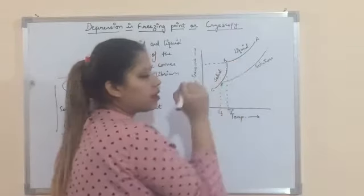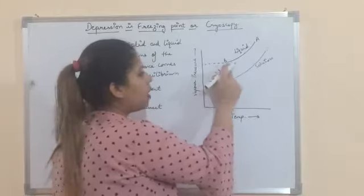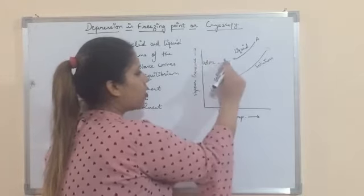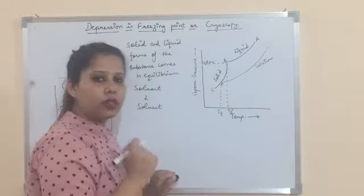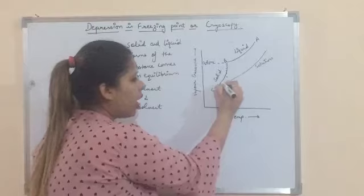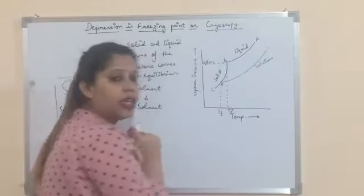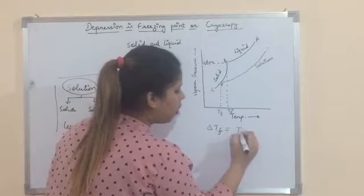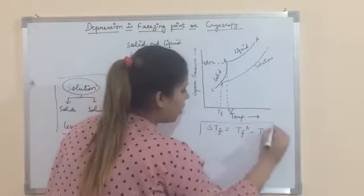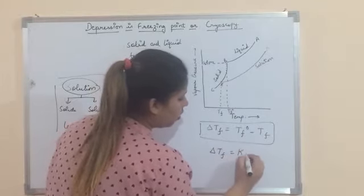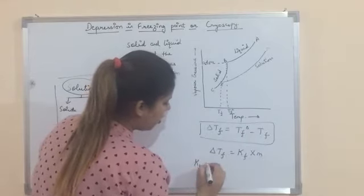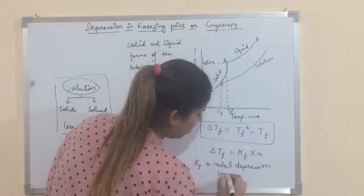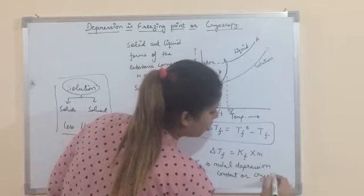At any temperature and at any concentration, the vapor pressure of the solution will always be lower than that of the solvent, represented by the curve DE. Point B is where the solid starts forming — the vapor pressure becomes equal to atmospheric pressure, giving the freezing point of the pure solvent. The curve for the solution shows it changes to solid at Tf, the freezing point of the solution. So depression in freezing point, ΔTf, equals Tf⁰ minus Tf, and its expression is ΔTf = Kf × m, where Kf is the molar depression constant or cryoscopic constant.